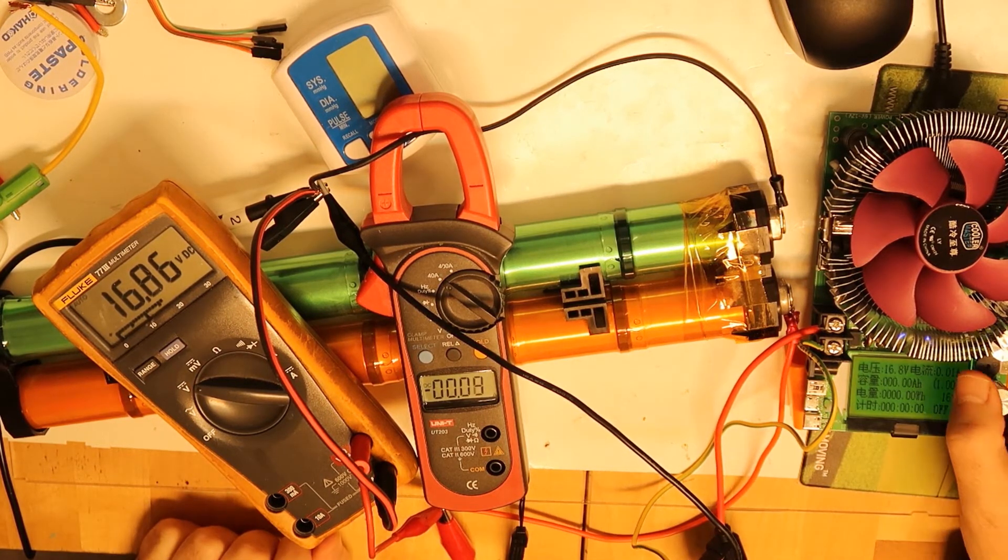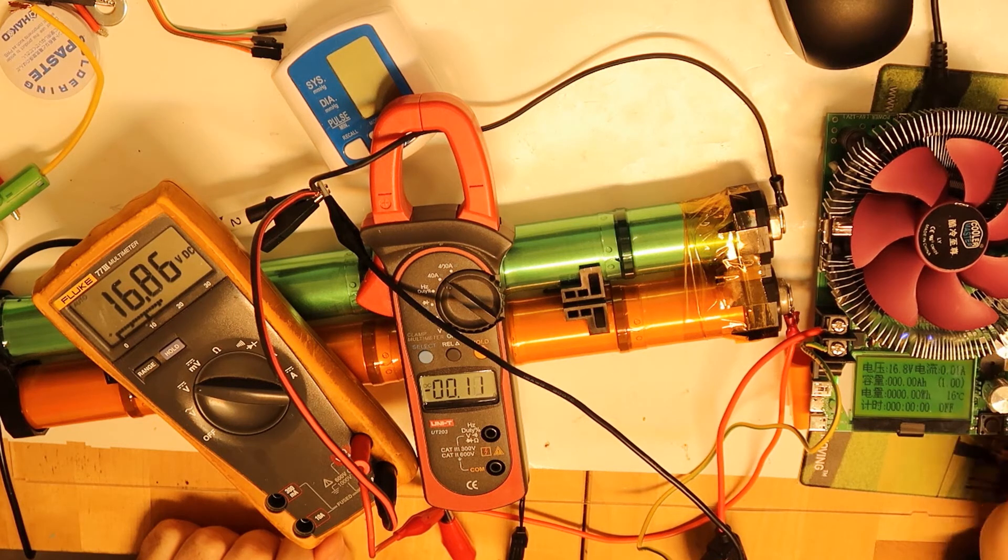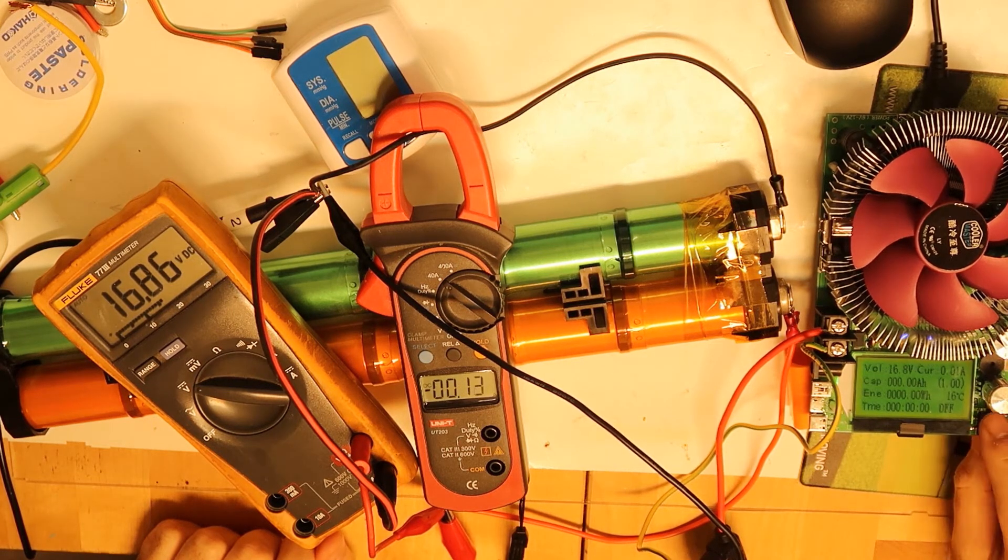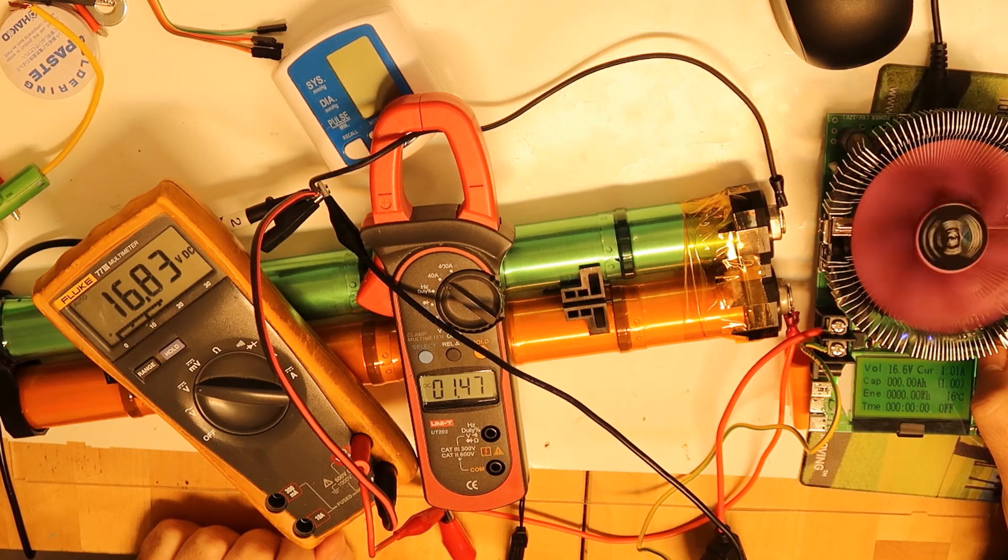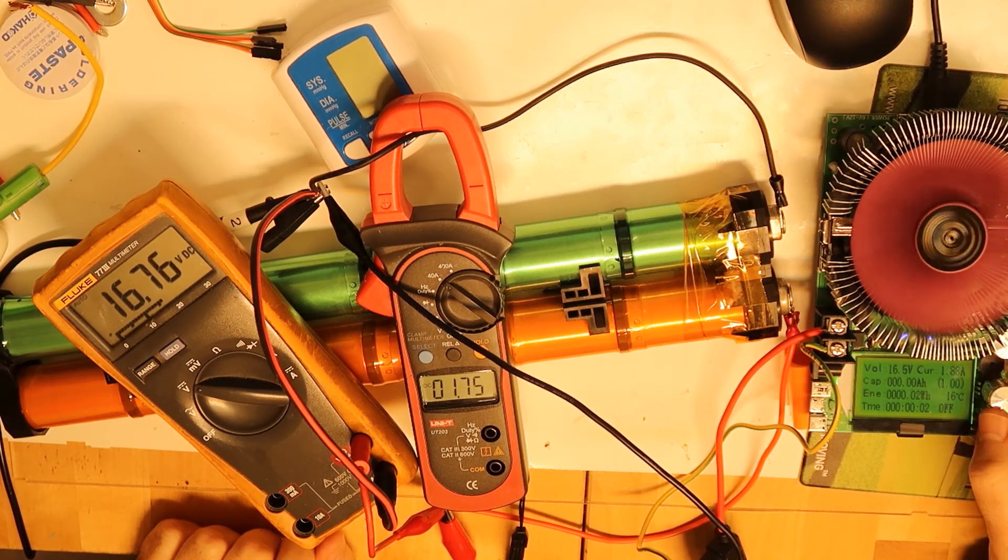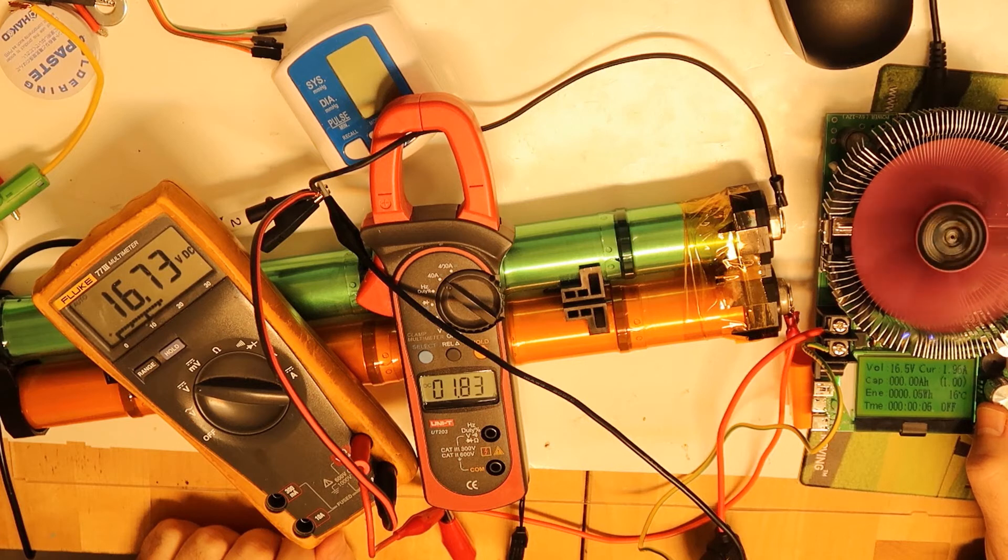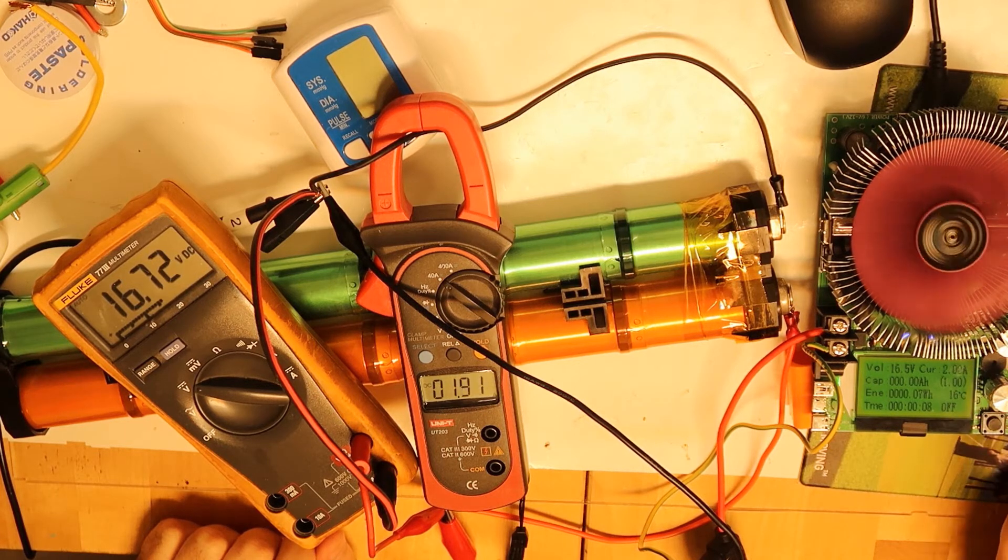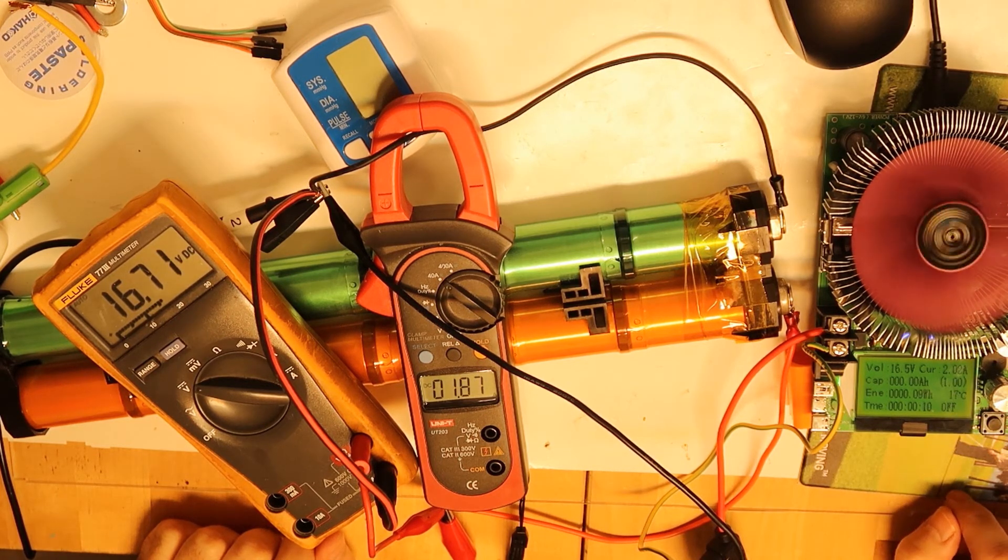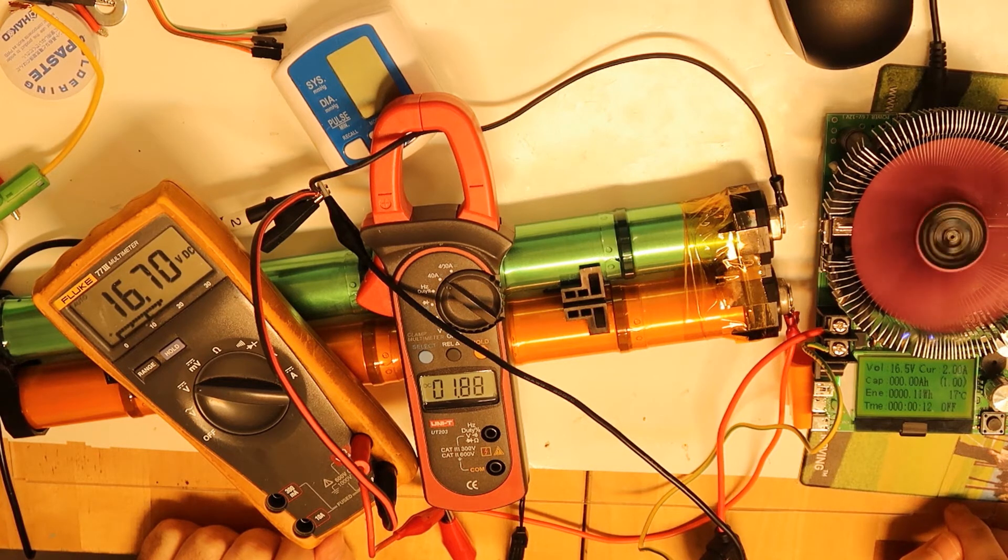Okay, now we will start the discharging. Connecting now, and we will do the discharge at 2 amps. So we are at 2 amps and testing the capacity of this cell.